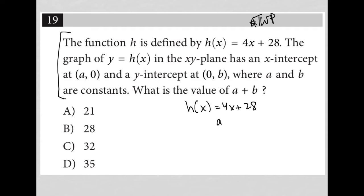So (a, 0) is the x-intercept, and a y-intercept at (0, b). So (0, b) is the y-intercept, where a and b are constants. What is the value of a plus b?